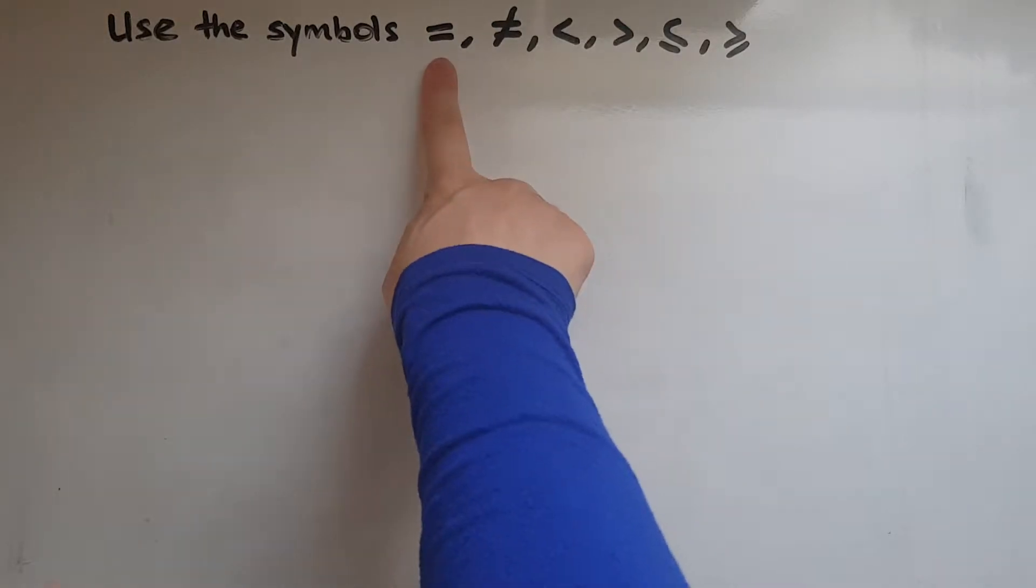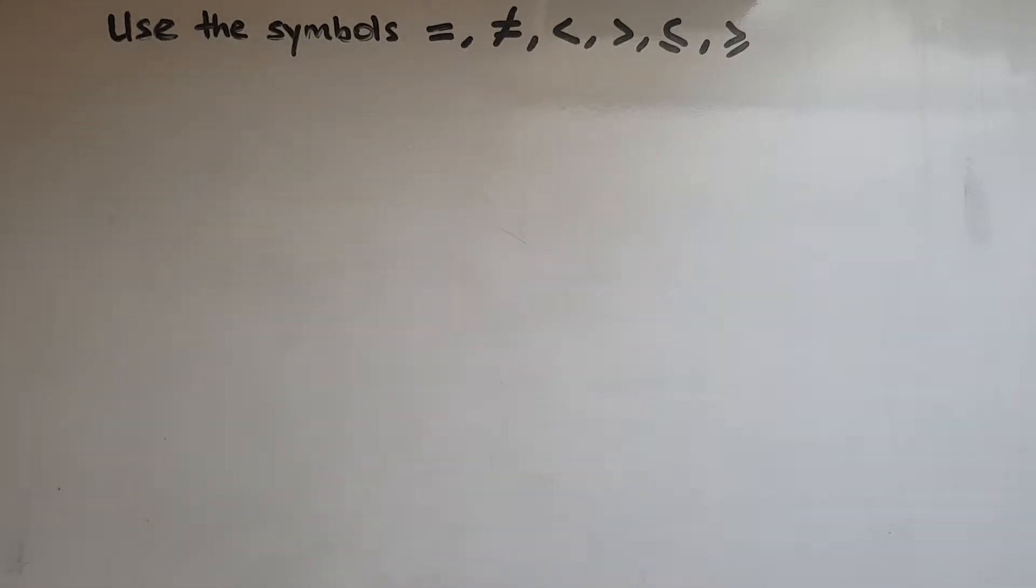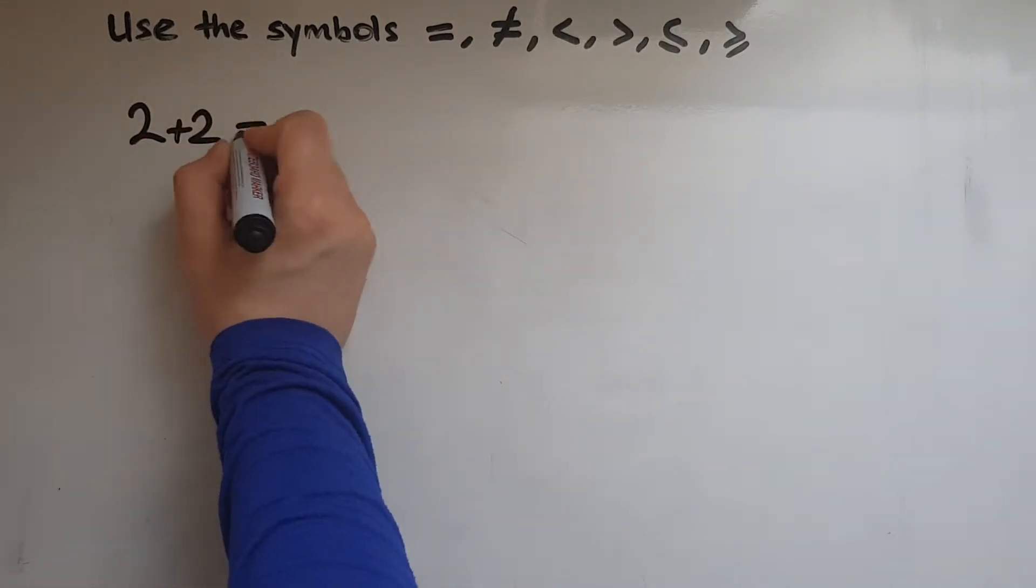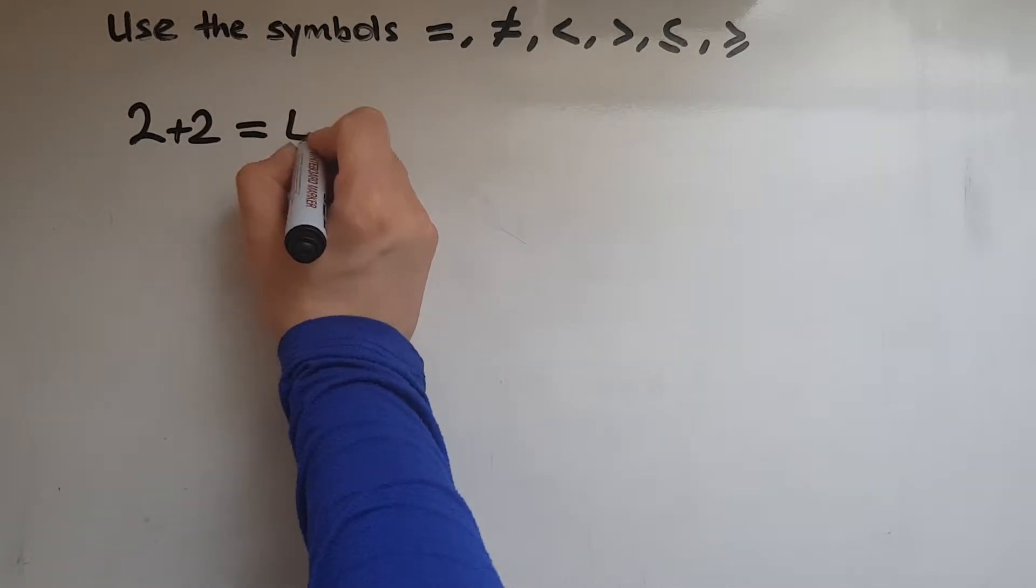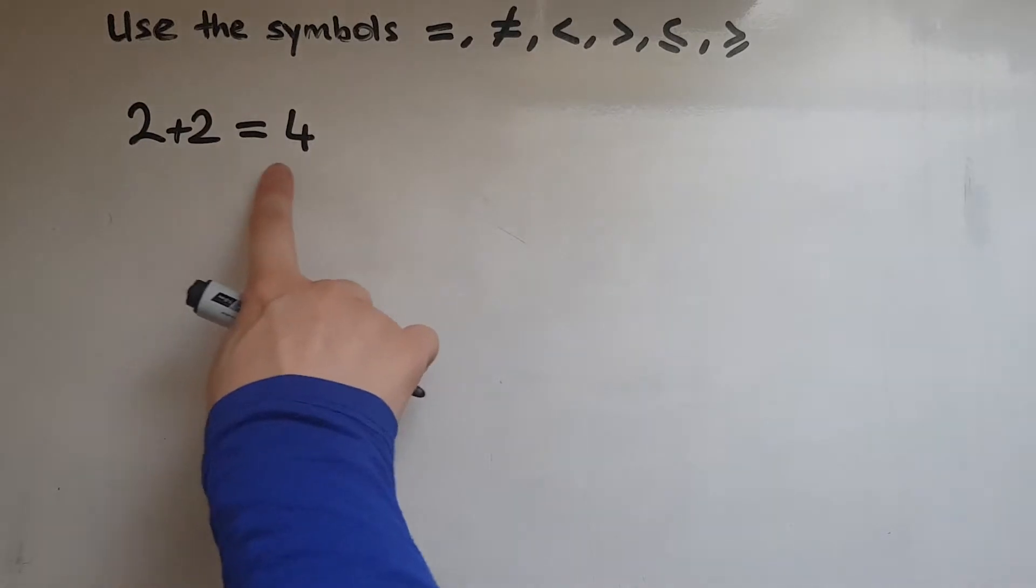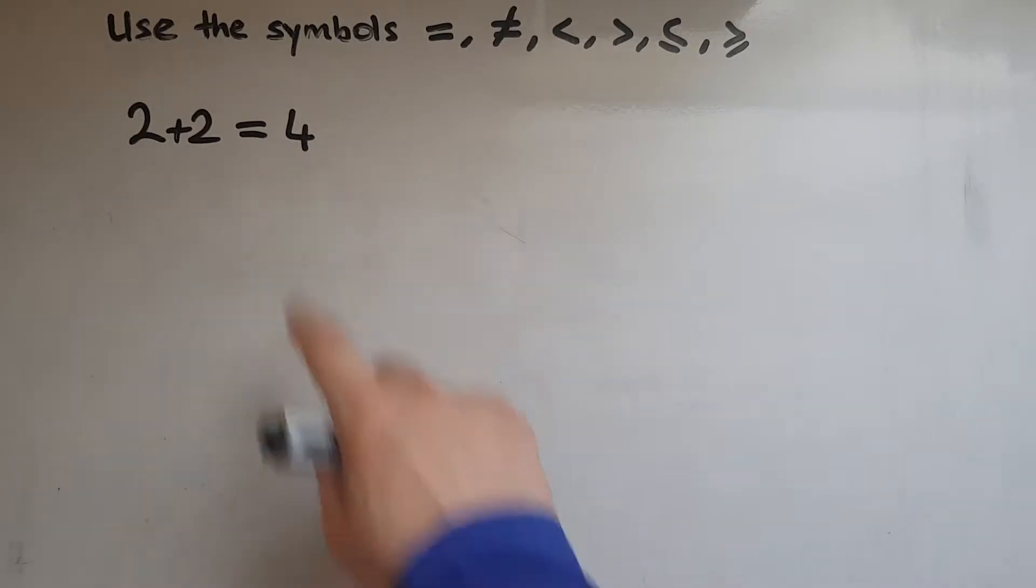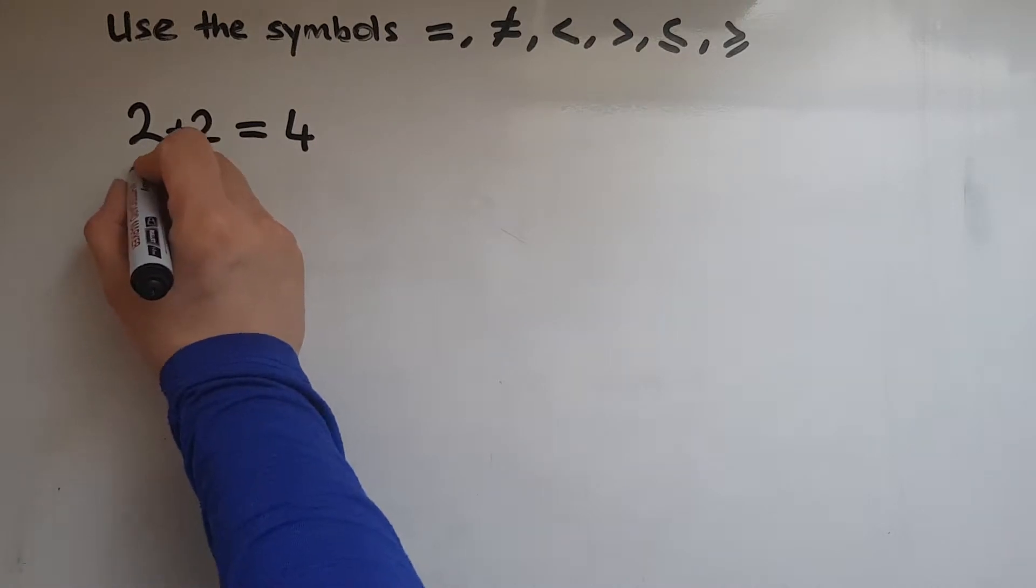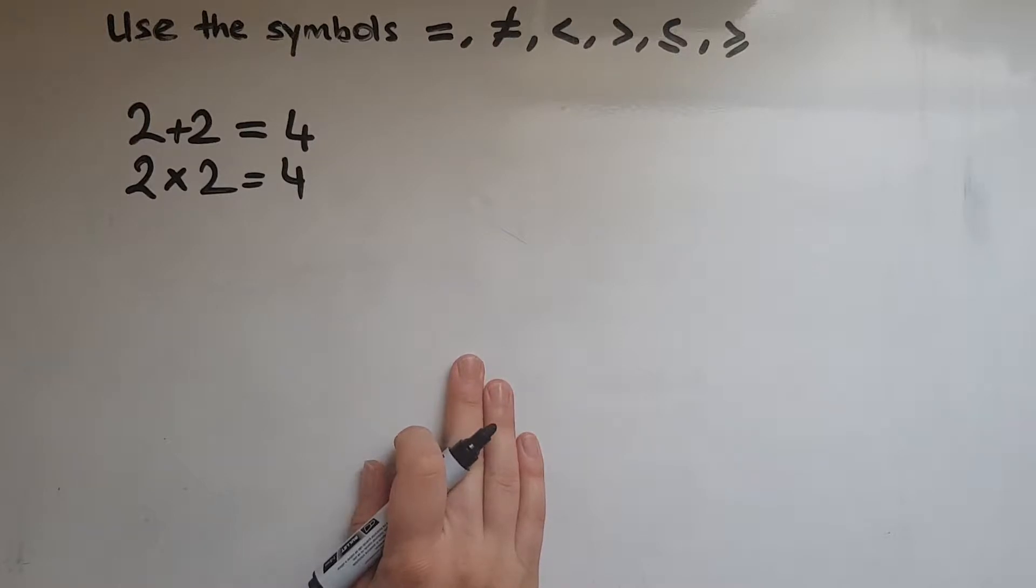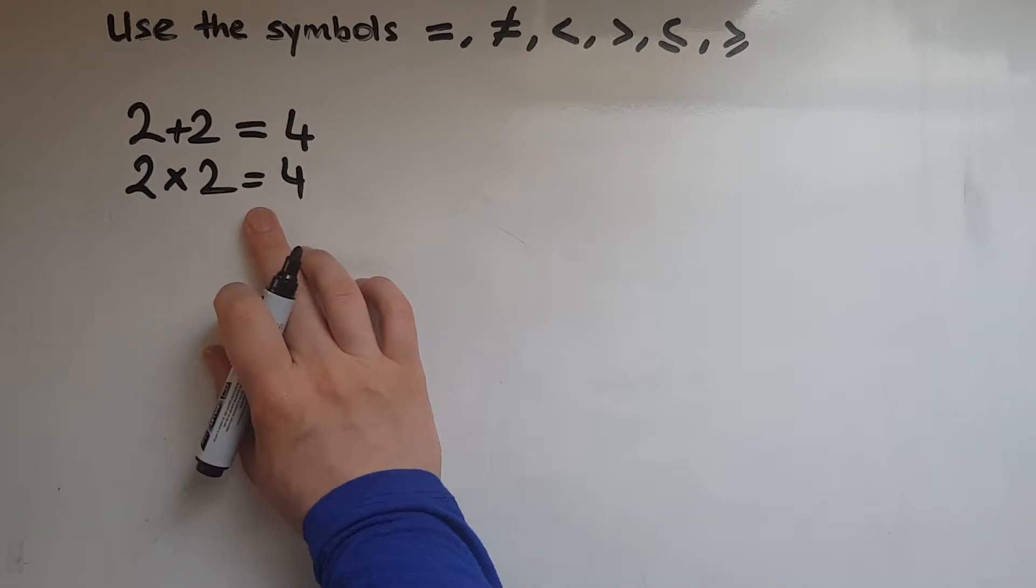The first one you should be familiar with, that is the equal sign. So 2 add 2 equals 4. That means that this side is equal to the other side. Another one, 2 times 2 equals 4. These are just two examples but there could be many more.